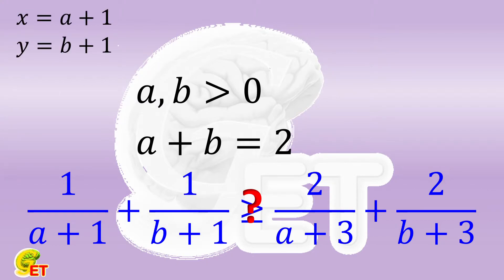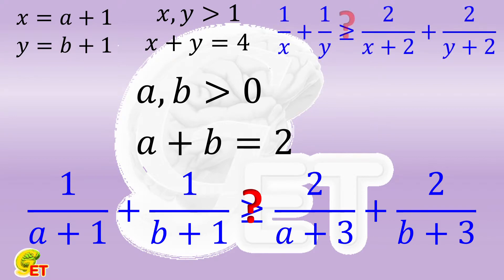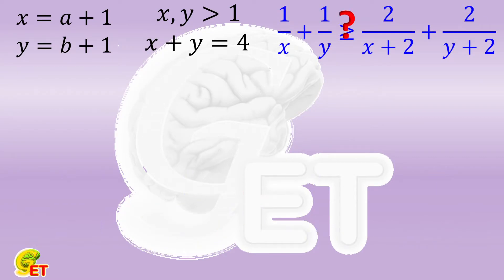So now, both x and y are bigger than 1, and their summation is 4. The conclusion to be proved becomes that 1 over x plus 1 over y is not smaller than 2 over x plus 2, plus 2 over y plus 2. Slightly simpler.